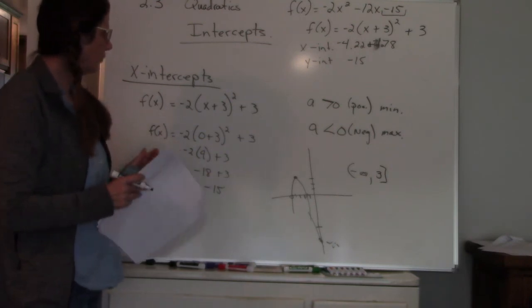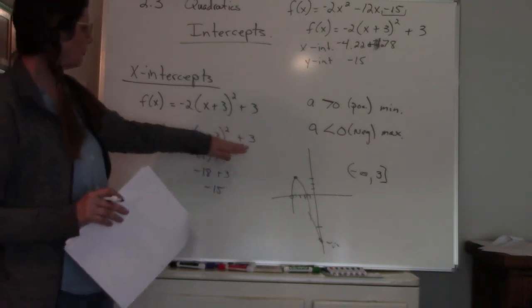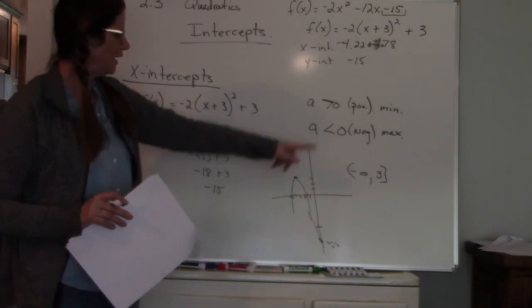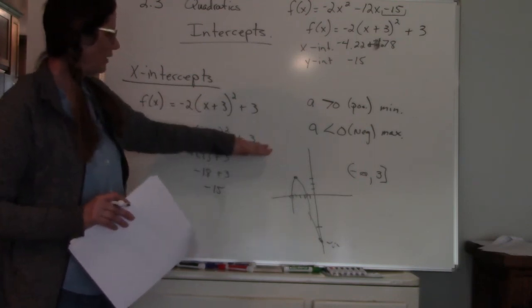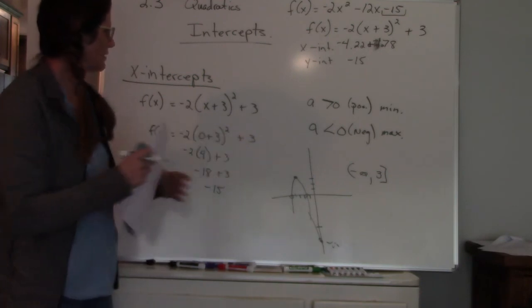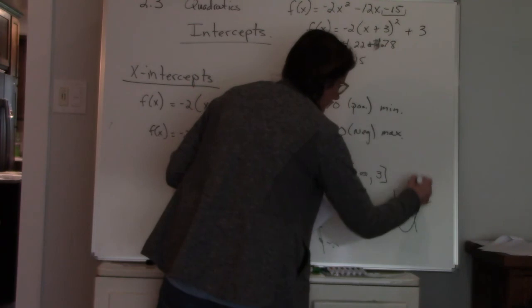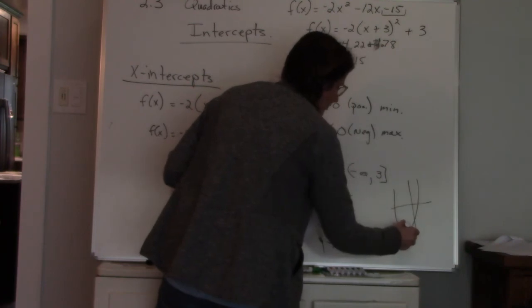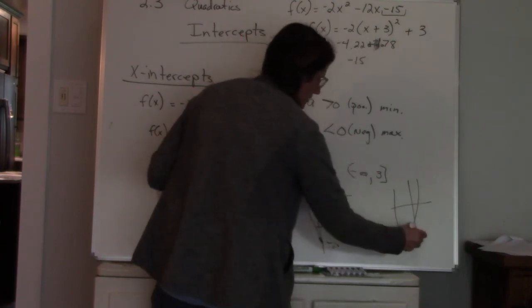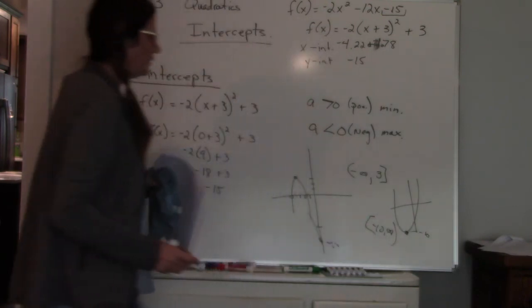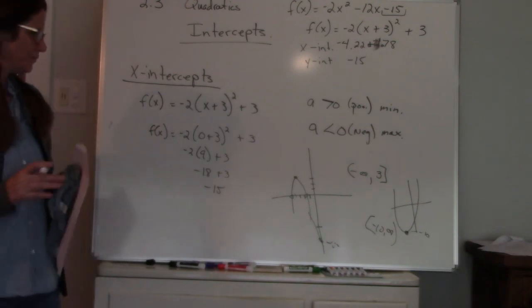So your range is all based on the vertex. So if the vertex is a maximum, it's going to be negative infinity to the y value of the vertex. If it's a minimum, so let's say it looks like this, and my vertex starts here, it would be from, let's say this is negative 10. So it would be from negative 10 to infinity. So it's going to go all the way up.